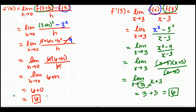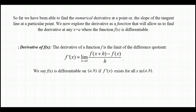Instead, we're going to find a function — remember, a function is a rule — so that we can use that rule to find the derivative at any x value. Here's the formal definition of the derivative given as a function: f prime of x equals the limit as h approaches zero of f of x plus h minus f of x, all over h. We say f of x is differentiable on the interval from a to b if this limit exists for all x values in that interval.